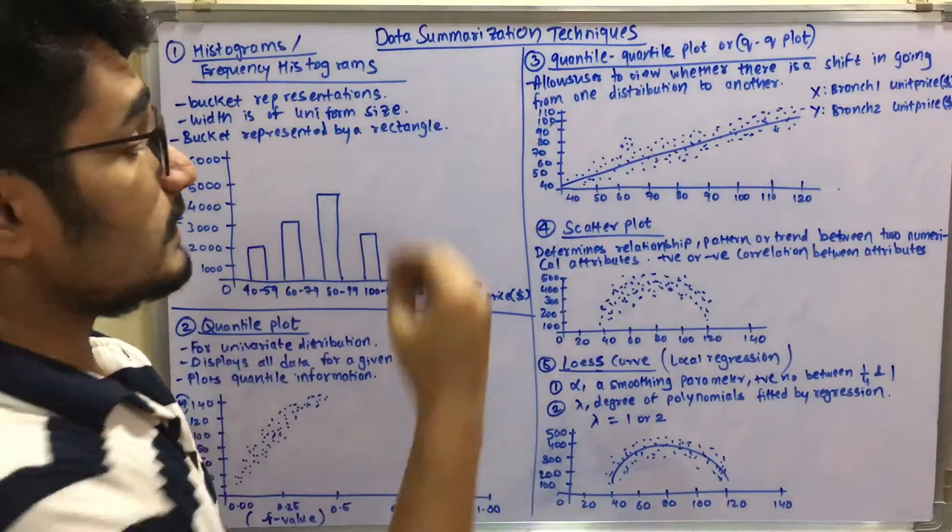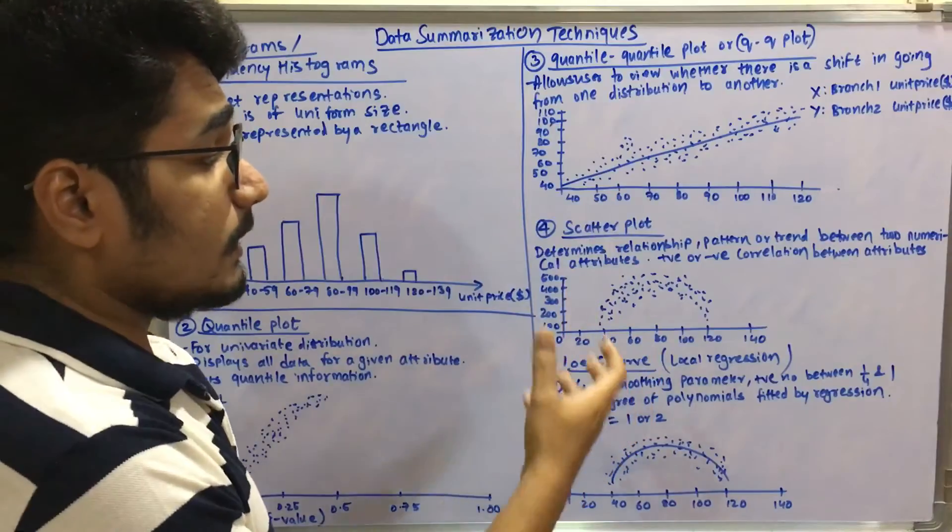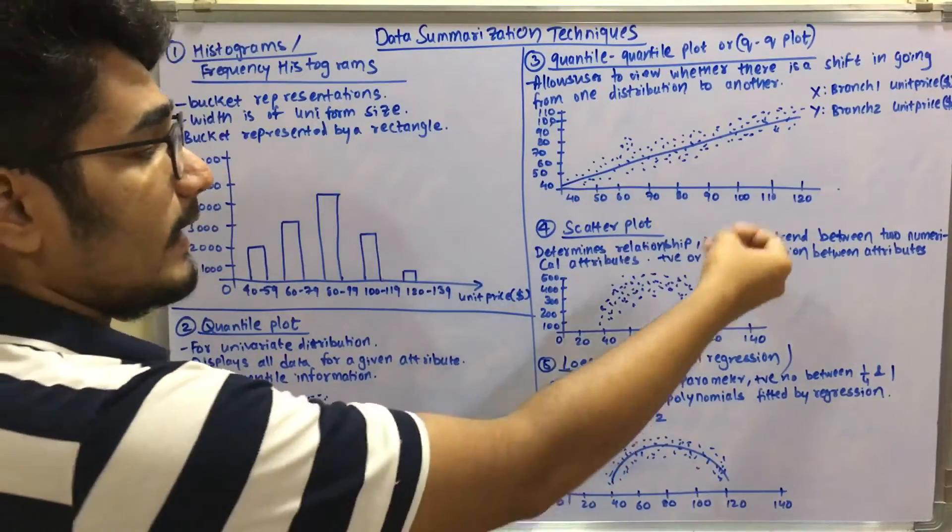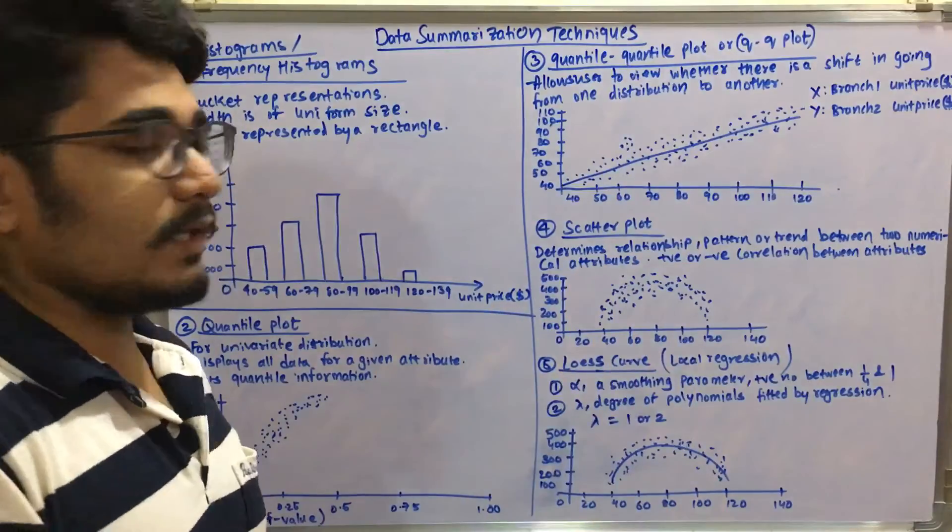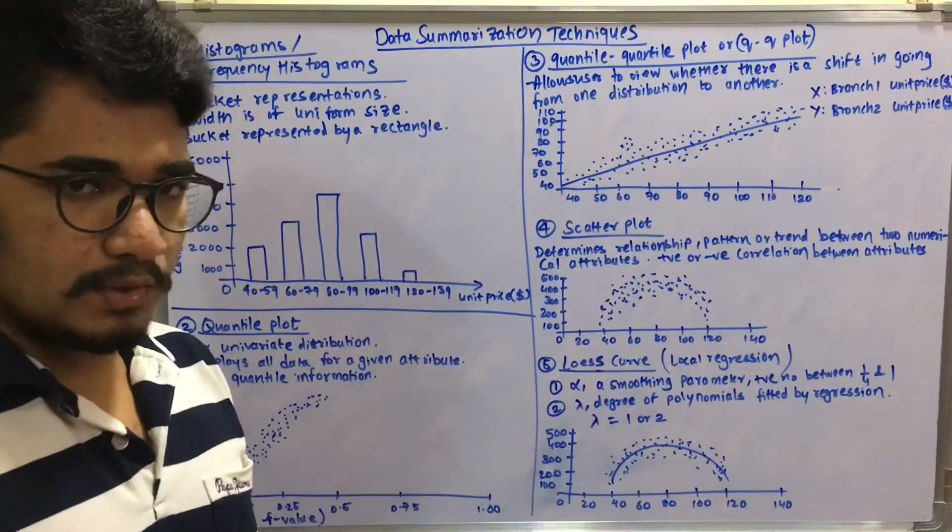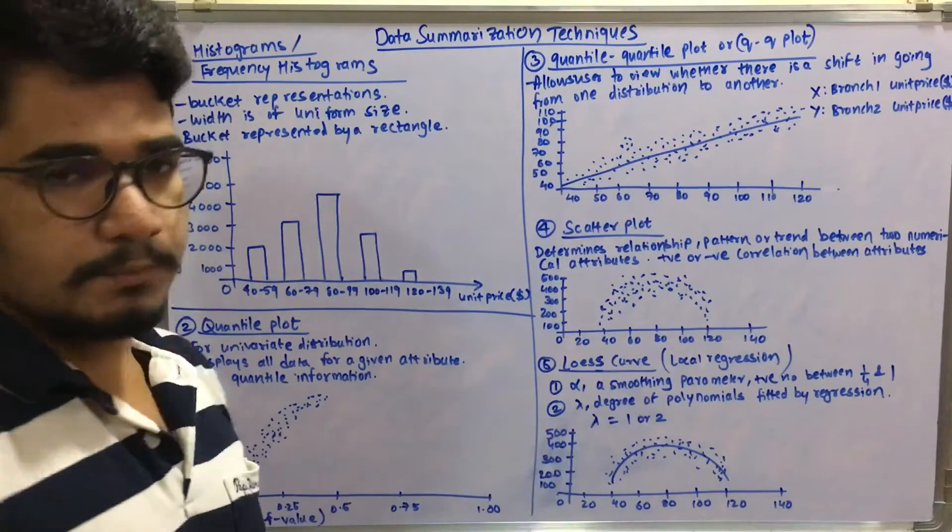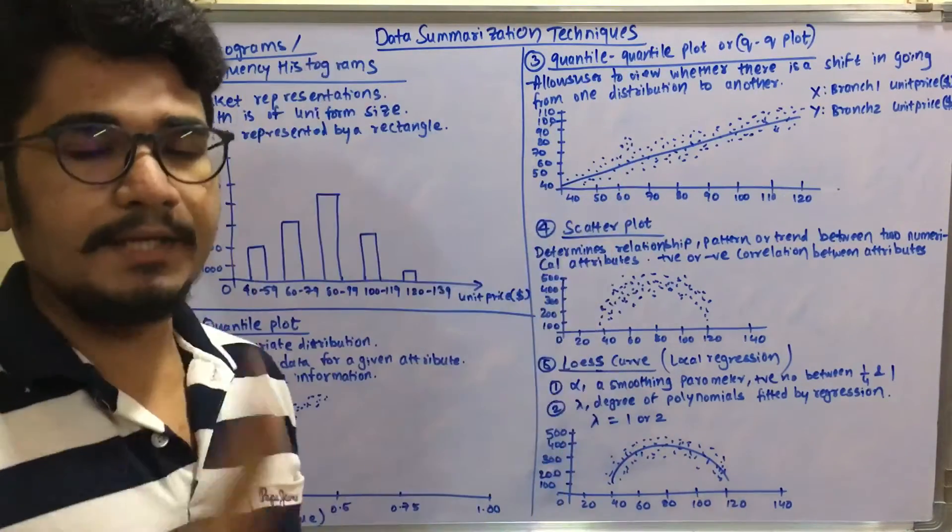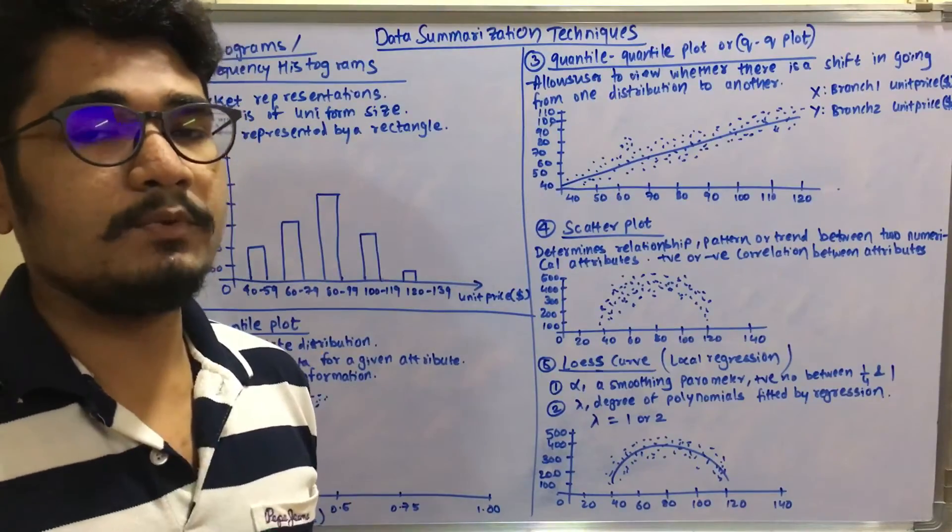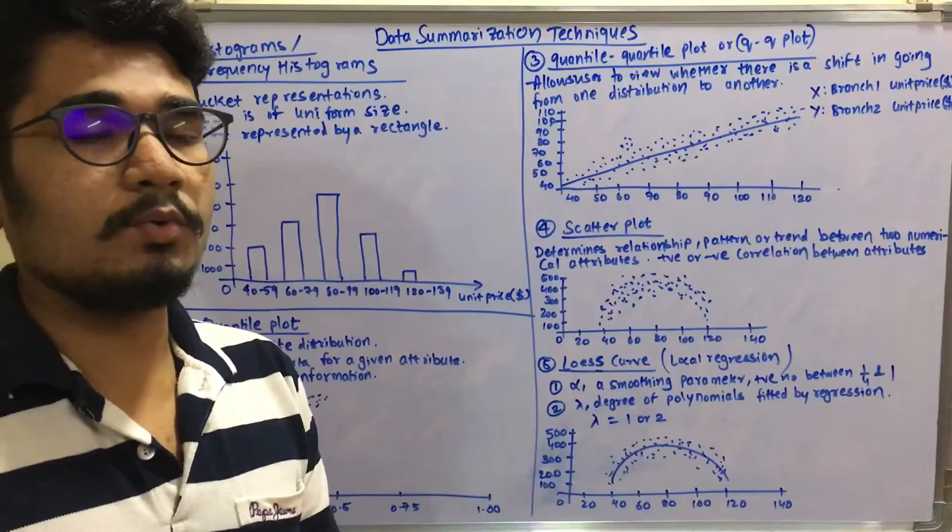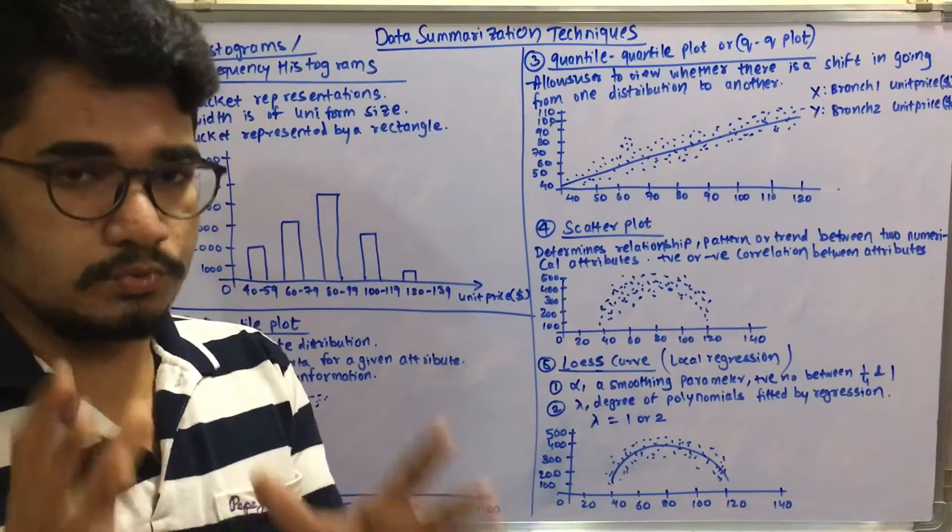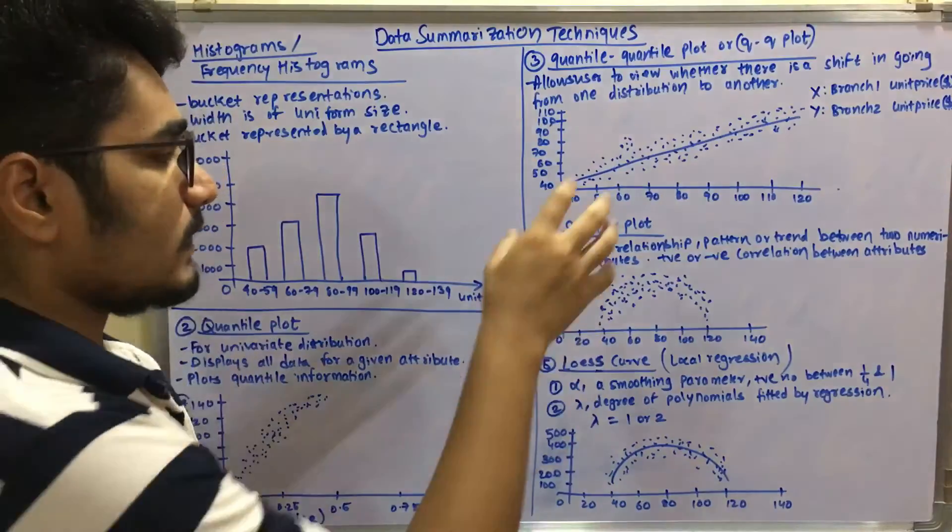Next we talk about the scatter plot. So scatter plot determines the relationship between a pattern or a trend or any other kind of numerical attributes, any relationship between these two kind of attributes. It can have either positive or negative correlation between two attributes. So whenever there are any two different numerical or mathematical attributes given, and if you want to compute their correlation analysis or compare these two, at that time you use a scatter plot.